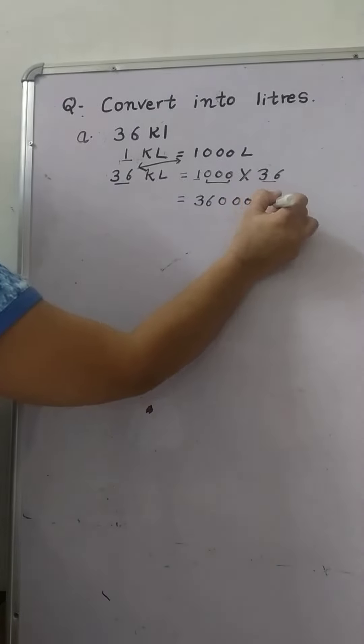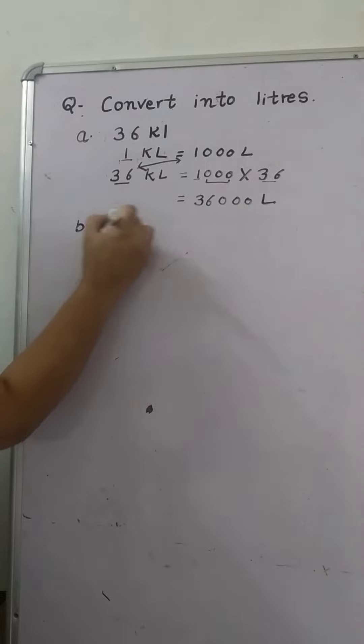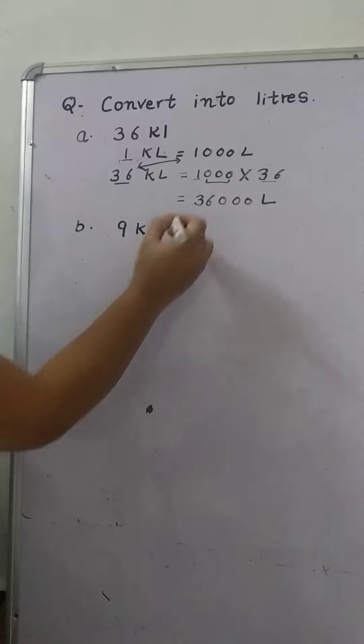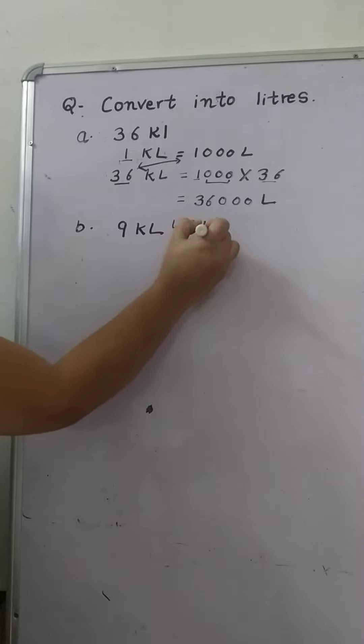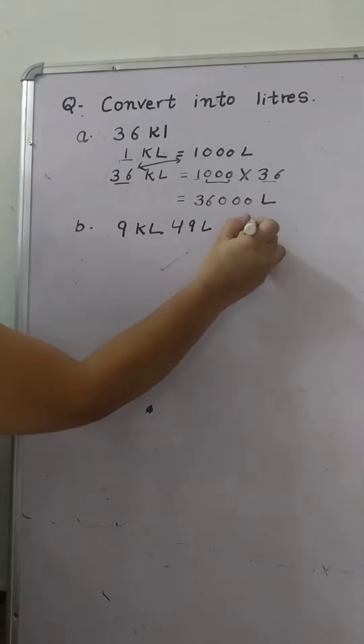And unit is liter, as we are converting in liter. Now coming to next, B: 9 kiloliter 49 liter. This we have to convert in liter again.